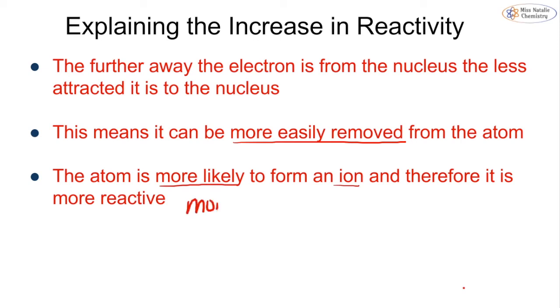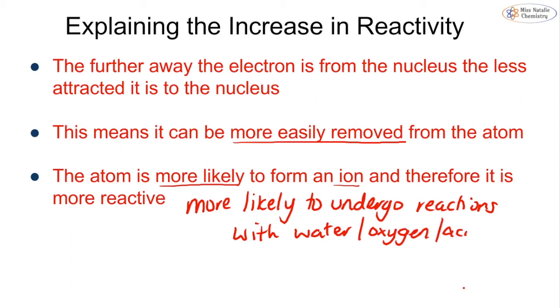That means it is more likely to undergo reactions with water or oxygen or acids or the halogens, any other reaction that it can undergo. It is going to be more likely to do that when the electron is further away from the nucleus. So because as you go down the group, the atoms get bigger.